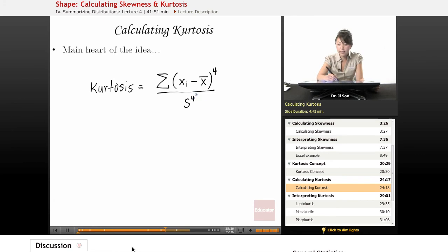Now, once again, this is going to always be positive. Standard deviation is already positive. And then we're going to raise it to the fourth power. So kurtosis is largely going to be a positive number.